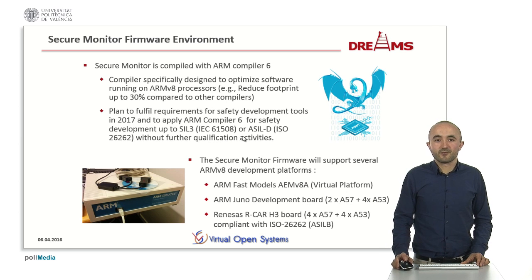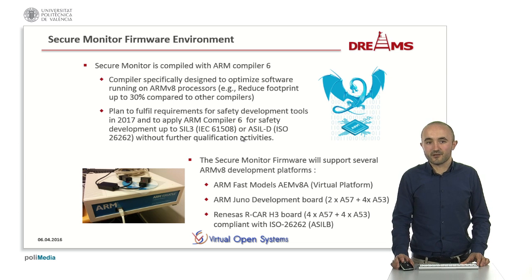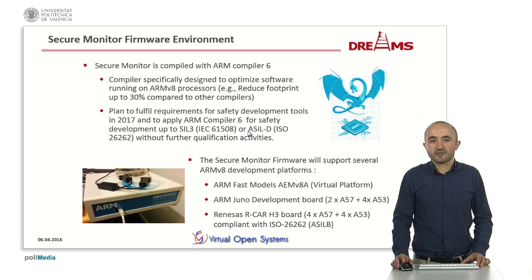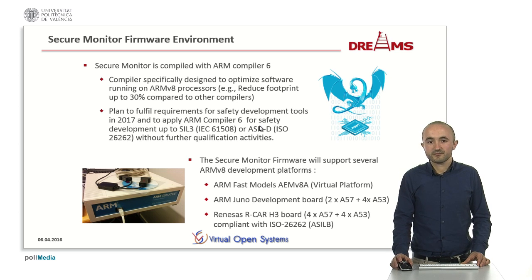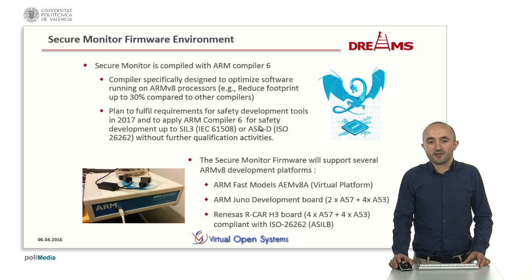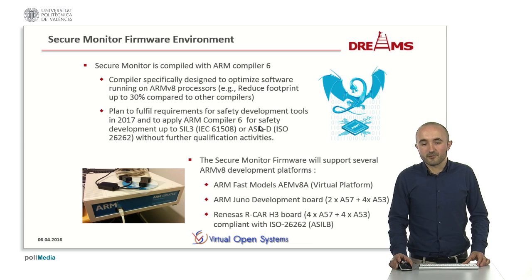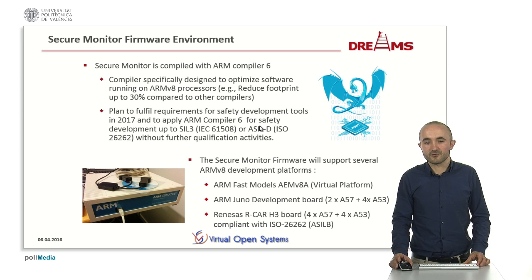Regarding the environment of the secure monitor firmware, the secure monitor will be compiled with ARM Compiler 6 for two main reasons. First, this compiler is specially designed to optimize software running on ARMv8 processors. Second, ARM plans to fulfill requirements for safety development tools, so we could apply ARM Compiler 6 for safety development without further classification activity. The secure monitor firmware will support several ARMv8 development platforms such as the ARMv8 model (virtual platform), the ARMv8 development board, and finally the Renesas R-Car H3 board, which is compliant with the automotive ISO 26262 ASIL certification.